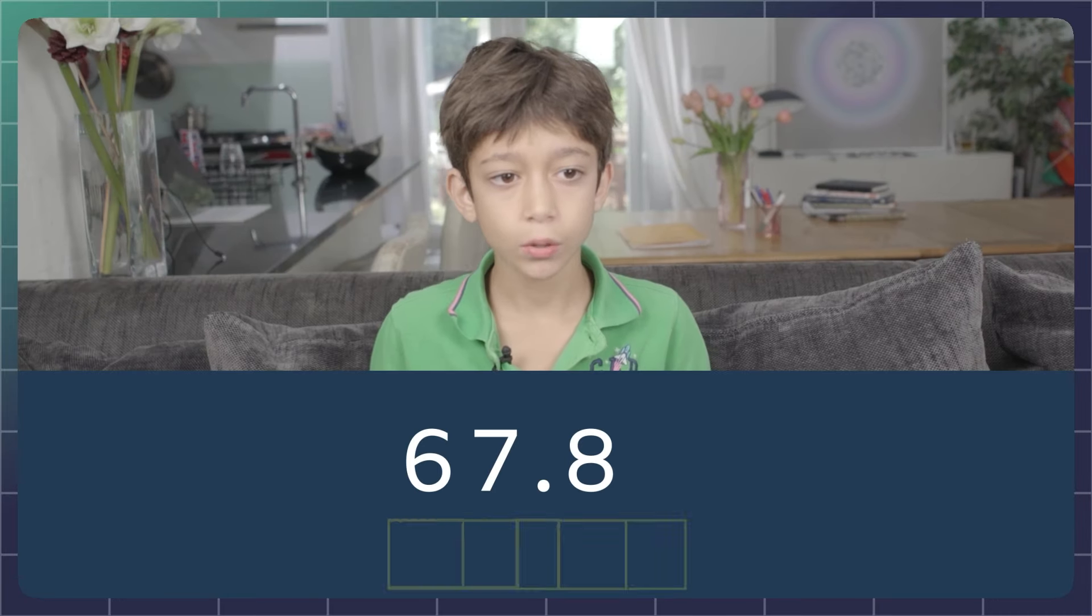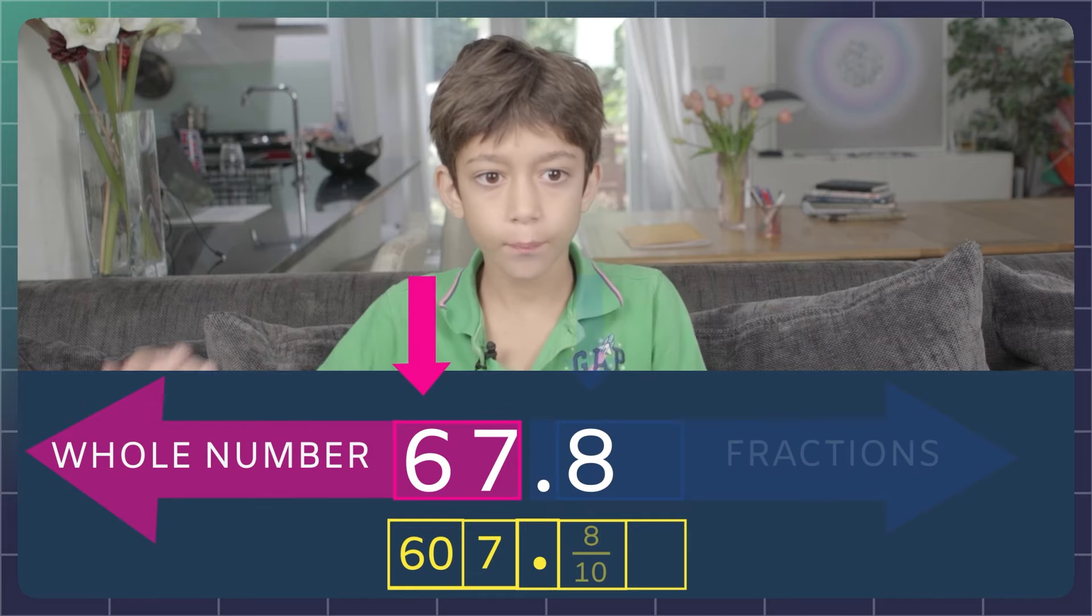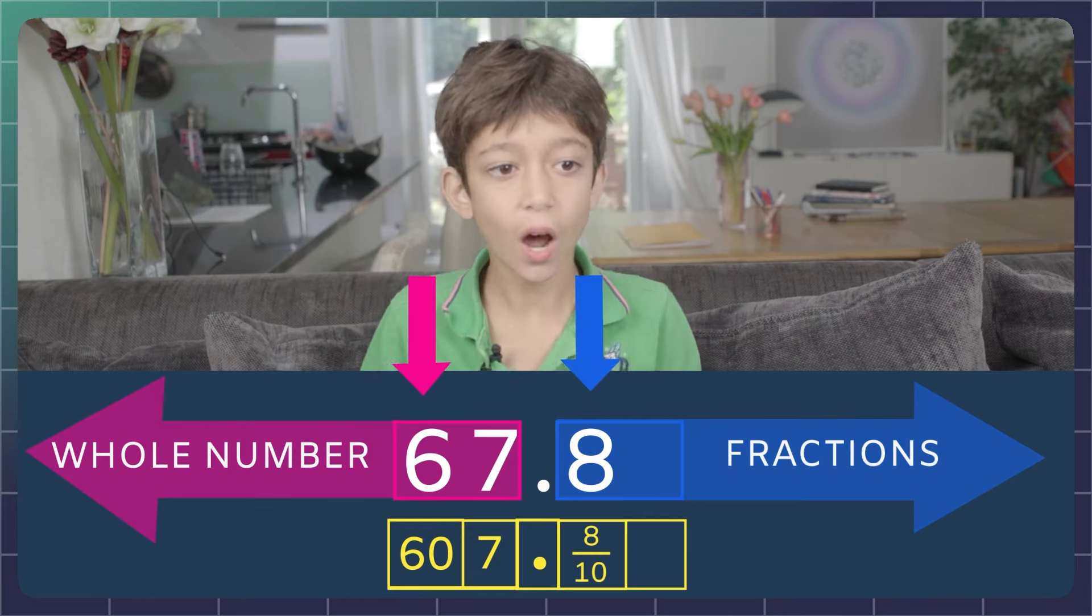But if we add a decimal point or comma to this number, we have a whole number with a fractional part. All the numbers to the left side of the decimal point are whole numbers and everything to the right are fractions.